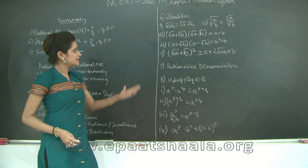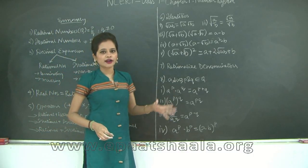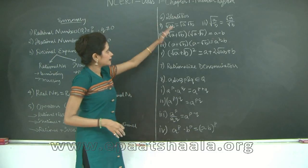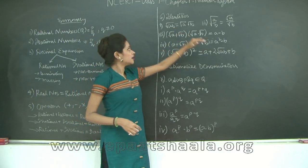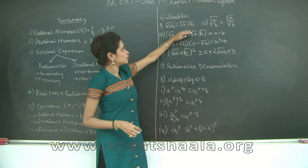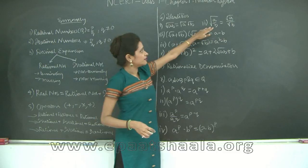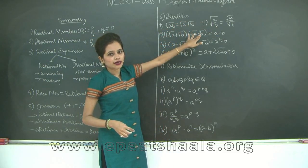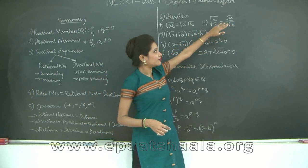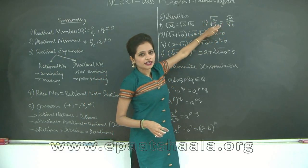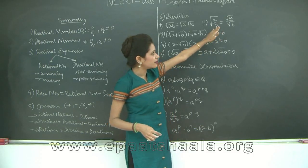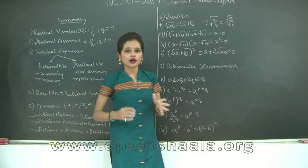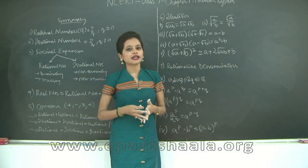Then there were identities, similar to algebraic identities from previous classes. You have root of (a·b), which can be split as root of a multiplied by root of b. Similarly for division, if you have numerator and denominator under one root sign, you can split them under separate roots. But you cannot do this for addition and subtraction.